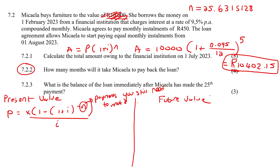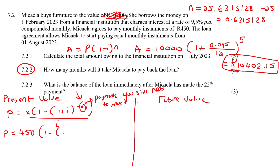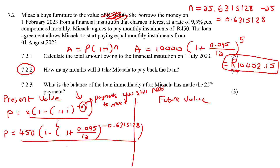It says after we have made the 25th payment, so you say N minus 25, which gives you the portion of the payment still left. We can't make that many payments, but that's the portion still remaining, and that is what we use in the formula. So you say: 450 times (1 minus (1 plus 0.095/12) to the negative 0.631528) over (0.095/12). If we calculate that, we get 282 Rand and 36 cents.